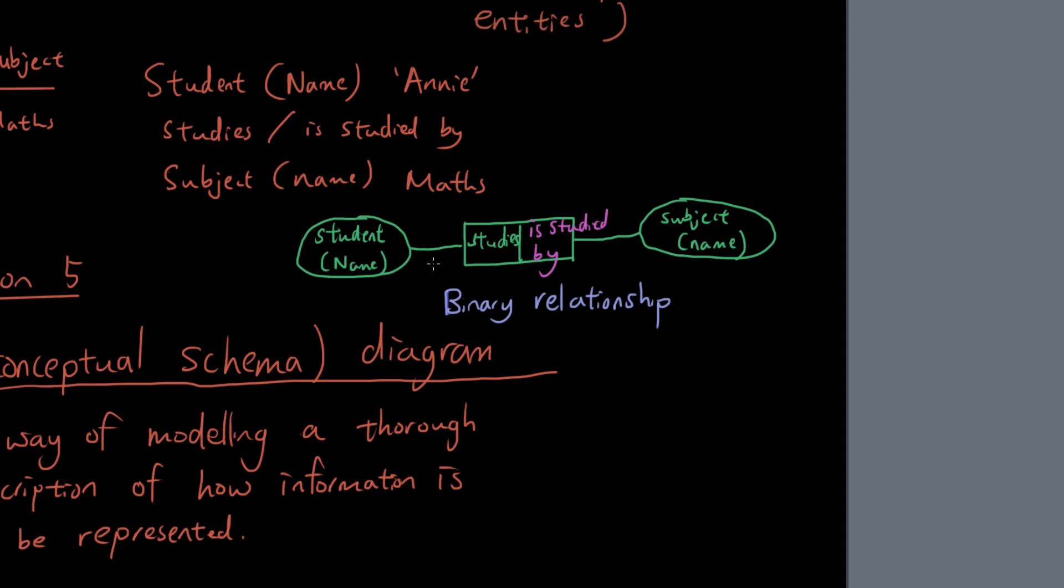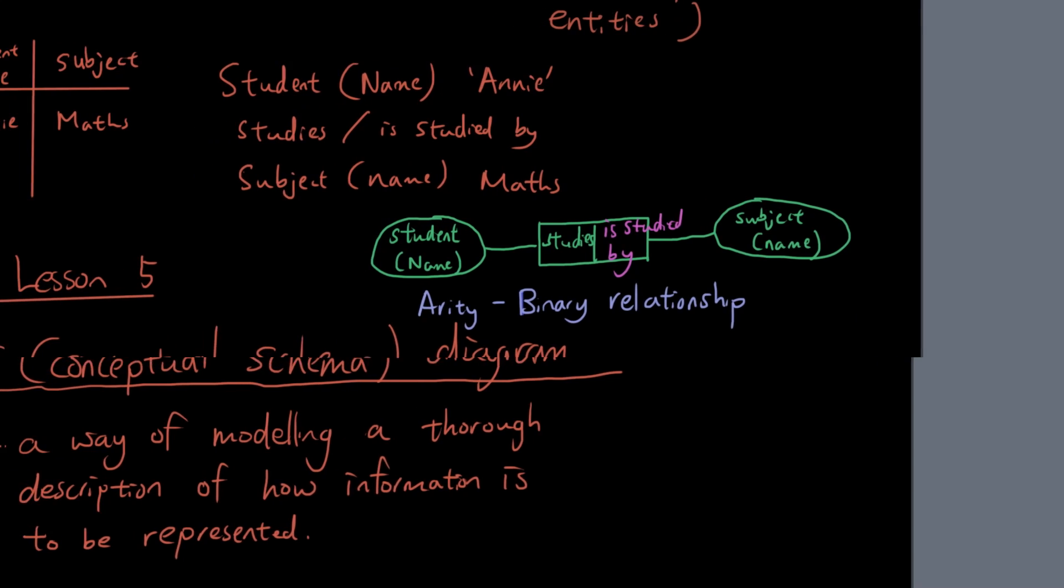And you can also have more than two entities involved. Three, four or five or you can just have one entity involved. And the number of entities in a relationship is called the arity. So what sort of relationship is this? What arity is it? It's a binary relationship. Okay, let's do a few more binary relationships.